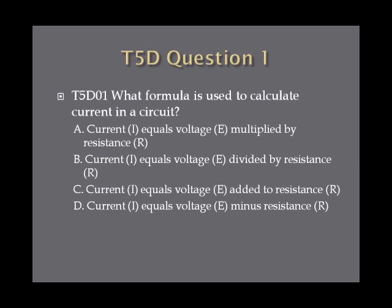Question 1: What formula is used to calculate current in a circuit? A. Current equals voltage multiplied by resistance. B. Current equals voltage divided by resistance. C. Current equals voltage added to resistance. Or D. Current equals voltage minus resistance.